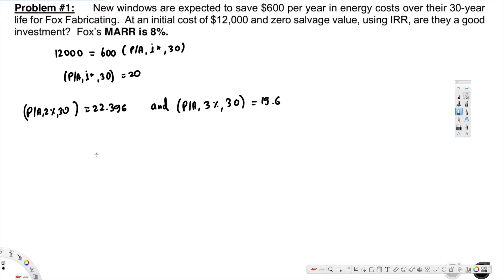Now by linear interpolation, we get i* to be 2.86%.